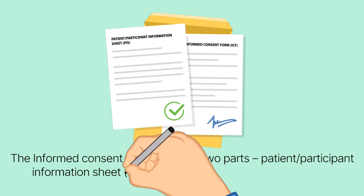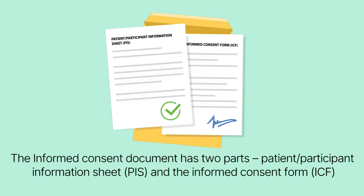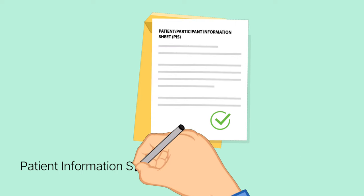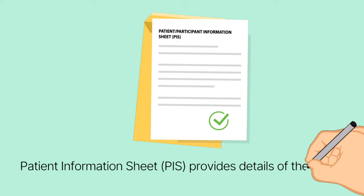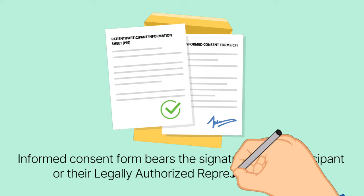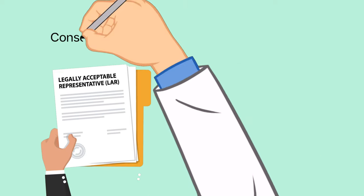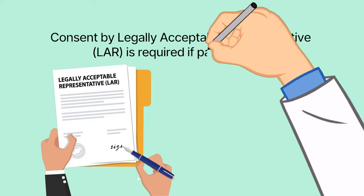The informed consent document has two parts: the Patient or Participant Information Sheet (PIS) and the Informed Consent Form (ICF). The PIS provides details of the study, while the ICF bears the signature of the participant or their Legally Authorized Representative (LAR).